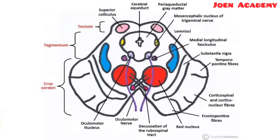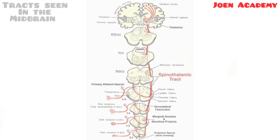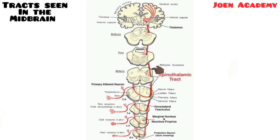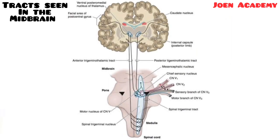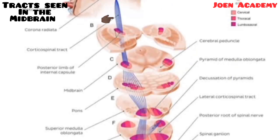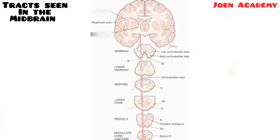Some important tracts are also associated with the midbrain. For the ascending tracts, we have the spinothalamic tracts and the trigeminothalamic tracts. For the descending tracts, we have the corticospinal tracts, the corticobulbar tracts, and the corticopontine tracts.